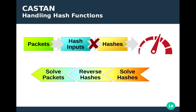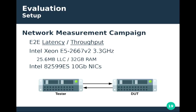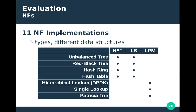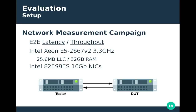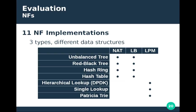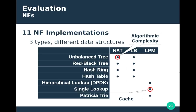To evaluate CASTEN, we used a simple testbed with two standard Intel Xeon servers with 10 GB NICs. A tester device generated traffic using MoonGen with hardware timestamping for precise measurement, and a device under test (DUT) ran the actual network function. We used 11 different network functions falling within three types: a network address translation system, a load balancer, and a longest prefix match router. For each type, we re-implemented them with different data structures having different performance profiles. I'll focus on two: NAT with an unbalanced tree, demonstrating an algorithmic complexity attack, and LPM with a single lookup table, demonstrating a cache attack.